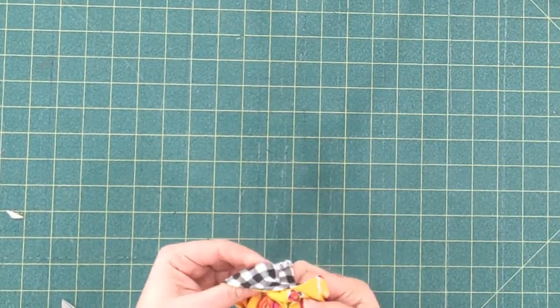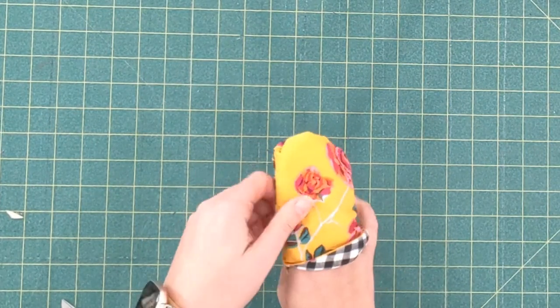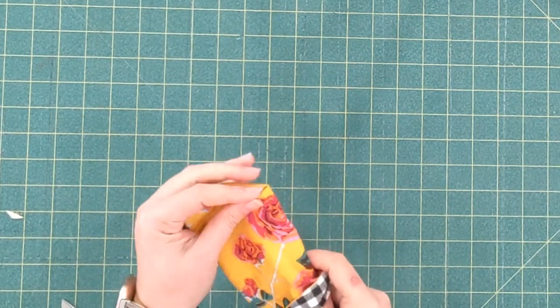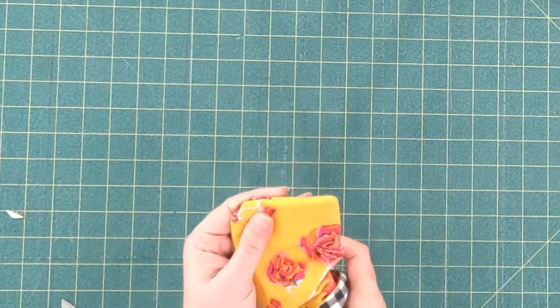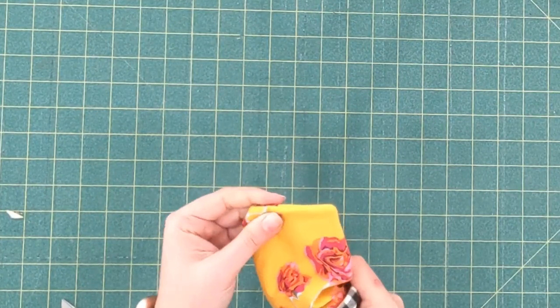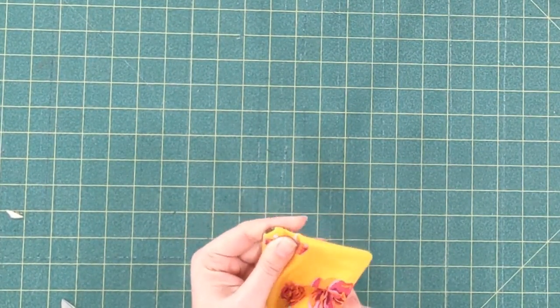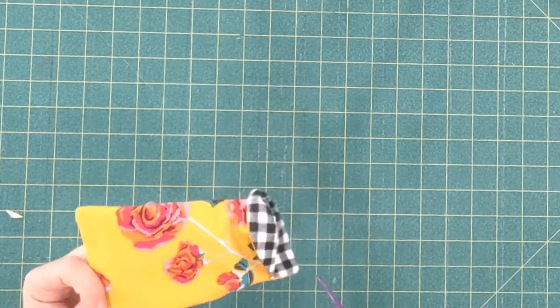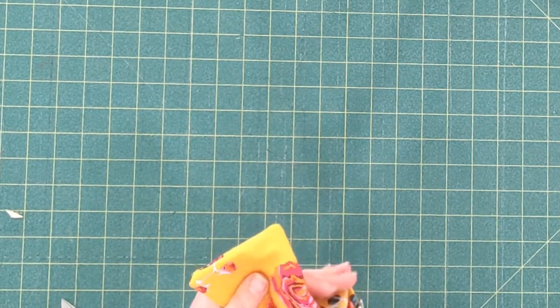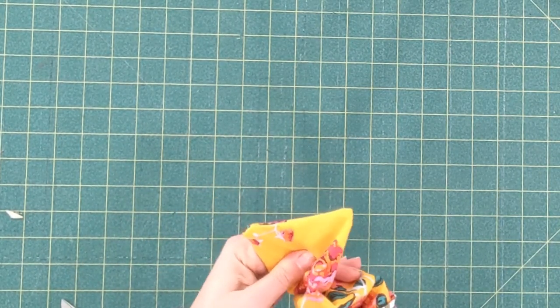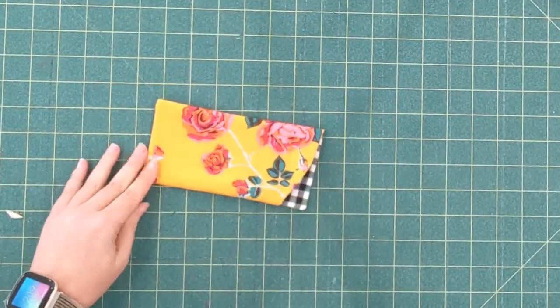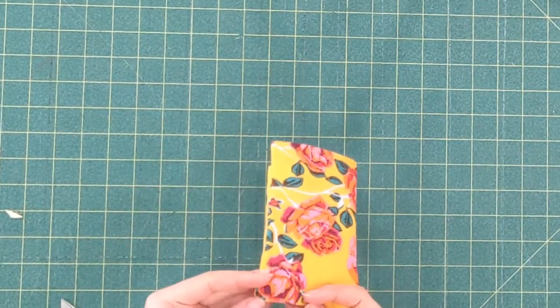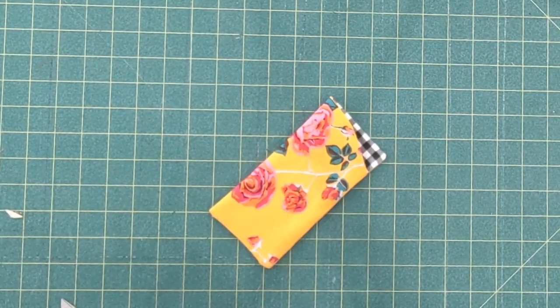So now you can turn it right sides out again, use a chopstick or point turner. I love this little tool I have, it's called the purple thing, it works really great. You're just going to push the corners out. I'm going to have to get the iron to help me with this one. Almost got it.